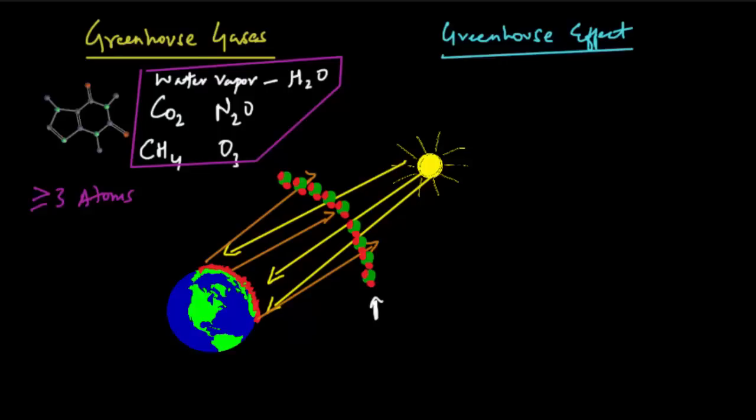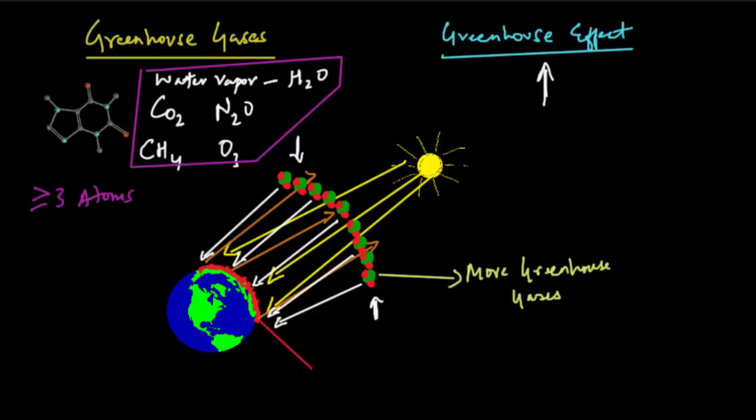Now this molecular structure allows them to absorb some of the escaping heat and then re-emit it towards the earth, which increases global temperatures and that causes the greenhouse effect. So we can also say the more greenhouse gases you have in the atmosphere, the more heat stays on earth.